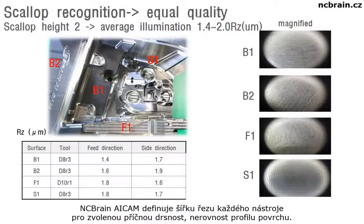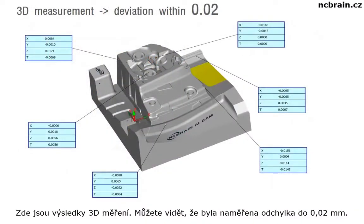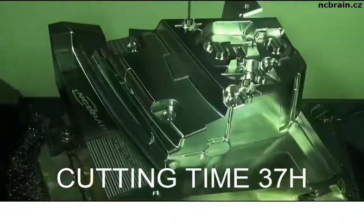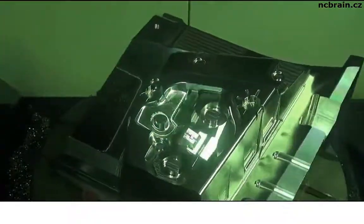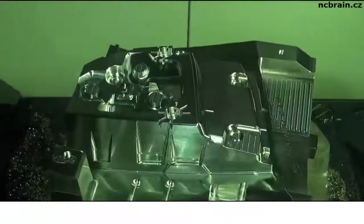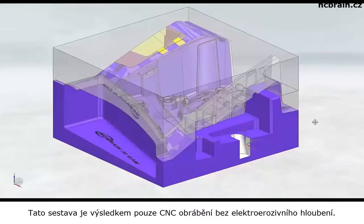AI Cam defines the side pitch of every tool fit for the scallop chosen. The terms of spinning direction adjust for scallop. The similarity of side pitch and spinning direction can help the polishing process, which makes uniform machining quality. These are the results of 3D inspection — you can see the deviation is within 0.02 millimeters.